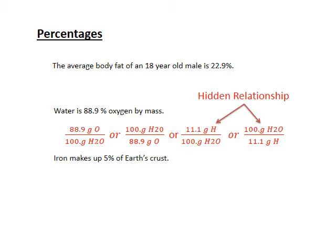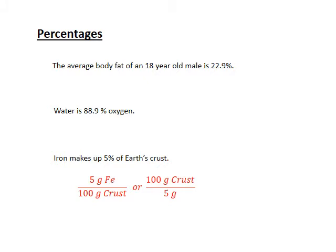And then another one here, I've got five grams of iron for every hundred grams of crust, and vice versa, a hundred grams of crust should yield five grams of iron. So I can go out in my yard and scoop up a hundred grams of soil and hopefully end up with five grams of iron, maybe or maybe not. This is an average expressed over the whole surface of the planet, so who knows.